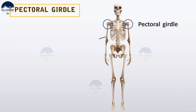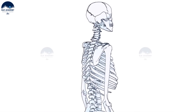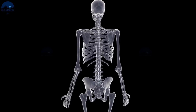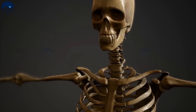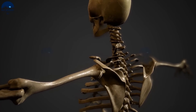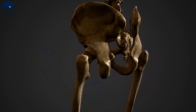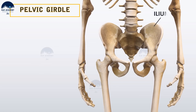Pectoral girdle bones help in joining the upper limbs with the axial skeleton, while pelvic girdle bones help in joining the lower limbs to the axial skeleton. Each half of the pectoral girdle consists of a clavicle and scapula. The clavicle is commonly known as the collar bone. The scapula is a large triangular flat bone situated in the back part of the thorax between the second and seventh ribs. The pelvic girdle consists of two coxal bones, each formed by the fusion of three bones: ilium, ischium, and pubis.